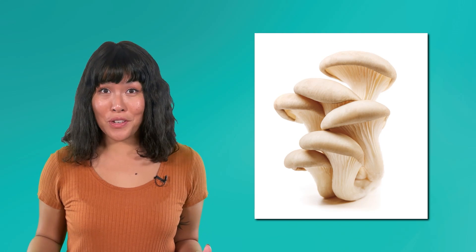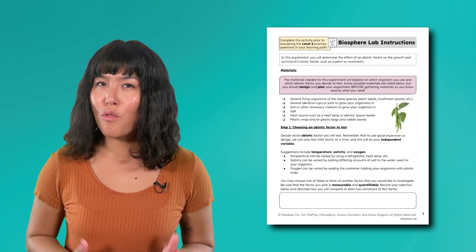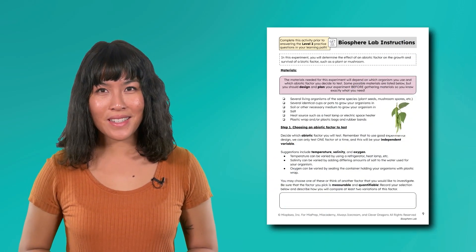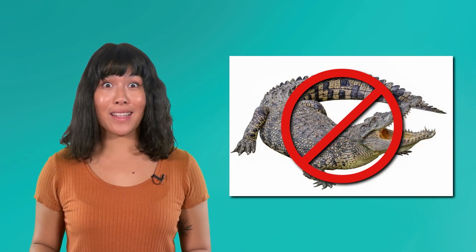Next, you'll need to pick an organism to test your abiotic factor on. I decided to grow oyster mushrooms. You'll also need to decide what property you'll measure to determine growth or survival. I measured how many mushrooms sprouted over a two-week period. You could also measure things like height, lifespan, or mass. Just as we said for your abiotic factor, it should be measurable and quantifiable. Be sure to check out the lab instructions in your lesson activities for examples of organisms that would work well for this experiment. Just make sure that it's safe. No poisonous mushrooms, and definitely no alligators.